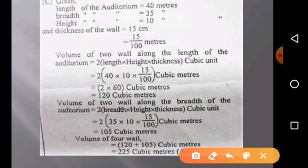The volume of two walls along the breadth side is 2 × (breadth × height × thickness). That's 2 × (35 × 10 × 15/100). After calculating, we will get 105 cubic meters. So the volume of the four walls is 120 + 105 = 225 cubic meters.